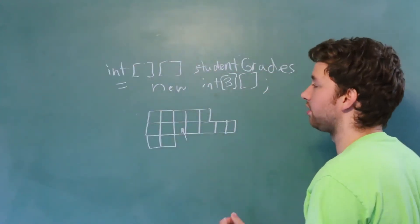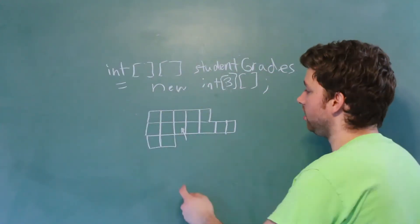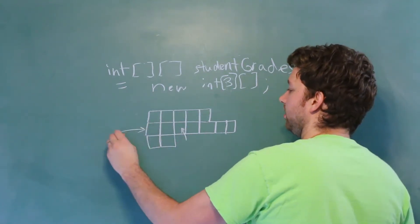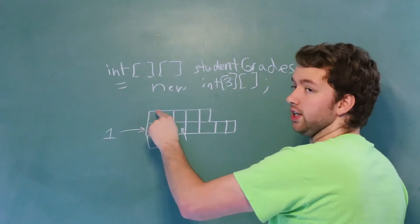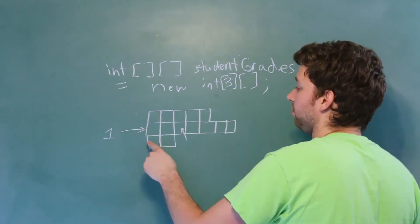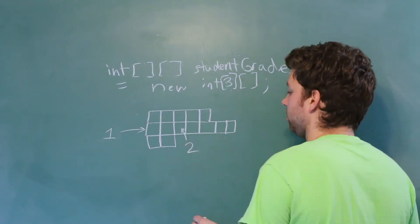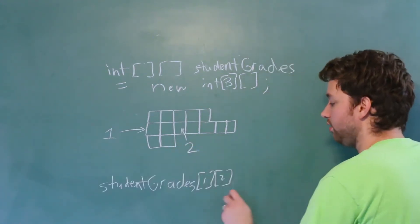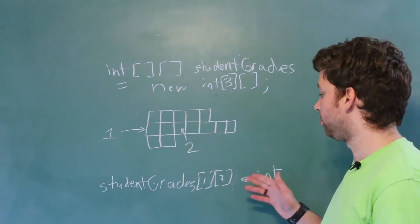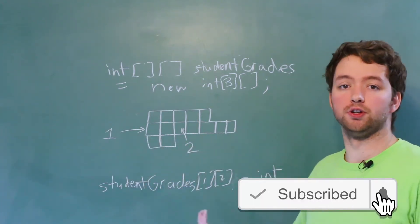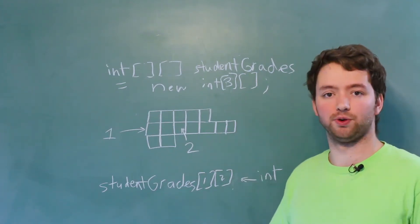So I prefer jagged arrays. They're much easier to work with. And if you want to grab a particular value such as this one here, you would grab the row with the index one because it starts at zero, and then you would grab the column with the index two. So it's going to look like this, and this here is an integer. So you can use this value anywhere an integer is expected. You can pass it to a method that takes an integer, you can assign a value to it, and so forth.